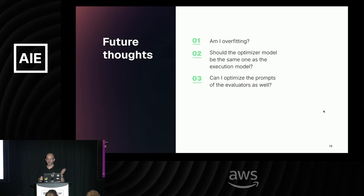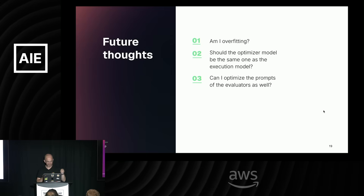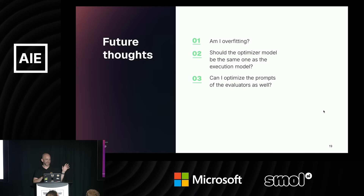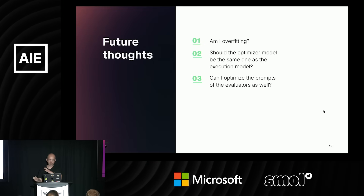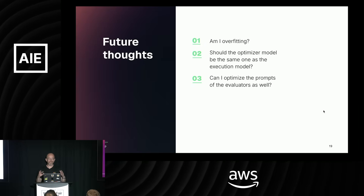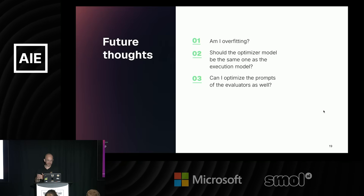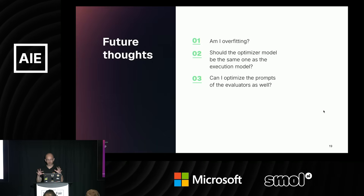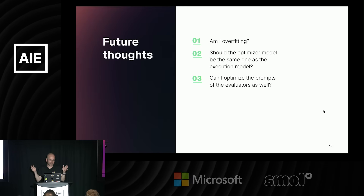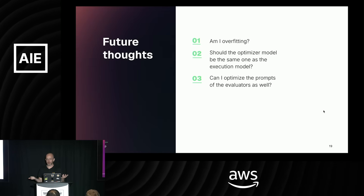Some future thoughts to wrap up: am I overfitting? I have 20 examples and I ran the evaluators, so maybe the prompt I'm getting works really well for those 20 examples but would be horrible on a new example. Yes, I was overfitting, because I gave the optimizer all 20 examples. Ideally you'd have more examples and — like classic machine learning — split them into train, test, and eval sets. You take the train set for optimization but use the test set to make sure you're not overfitting to your training data.